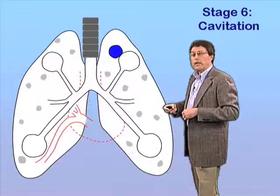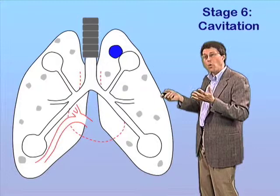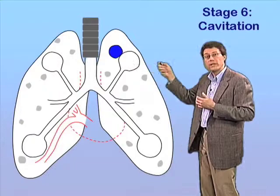Going back to our model, if that core of caseation necrosis undergoes complete liquefaction, this can lead to the excavation of an actual cavity within the lung, as diagrammed here. This is literally a large hole in the lung where the tissue has completely broken down and has exited via the airway.